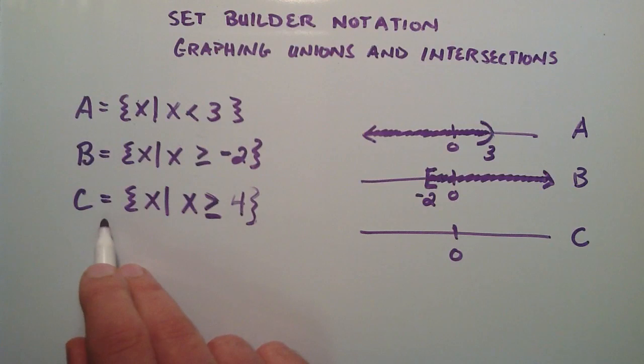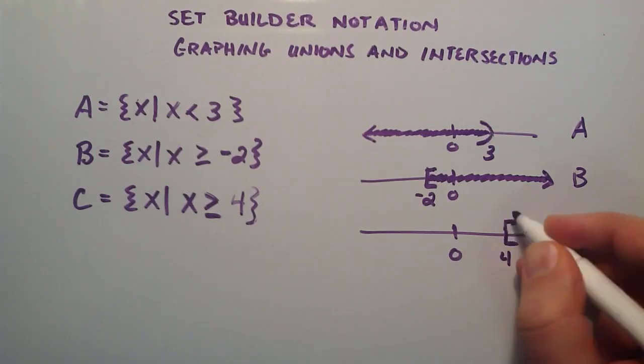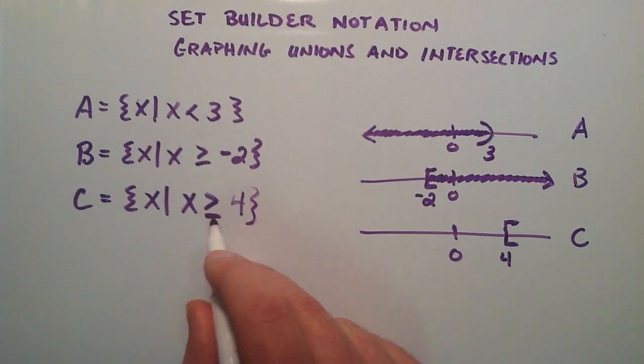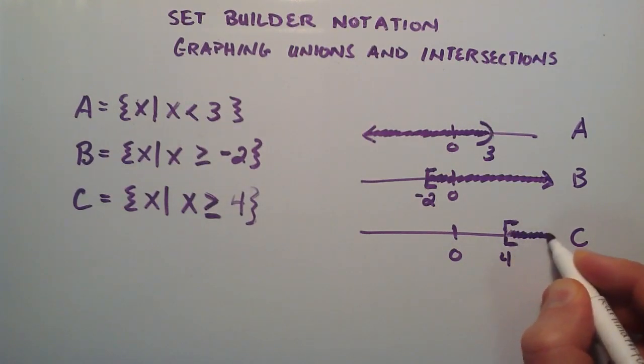Finally let's graph set C. Set C starts at the value 4. We're going to use the square bracket because it's greater than or equal to, which means it can include the 4. And then we just shade all the values greater than 4.